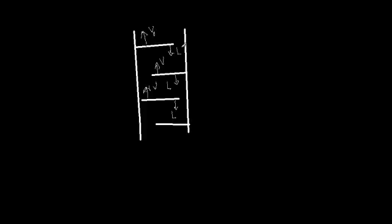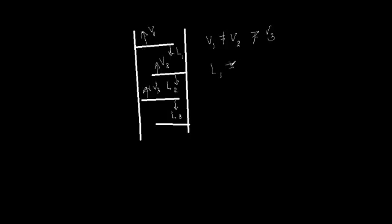Actually, what we are going to get is that the first tray has V1 and L1, the next has V2 and L2, and the next has V3 and L3. So V1 is not equal to V2, and these are not equal to V3 as well. In the same manner, the liquid flow rates are not actually equal to each other. So using this constant molar overflow assumption, we are getting some error in our system. Therefore, we are now going to consider the distillation column without that assumption.